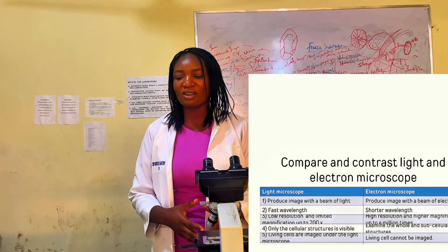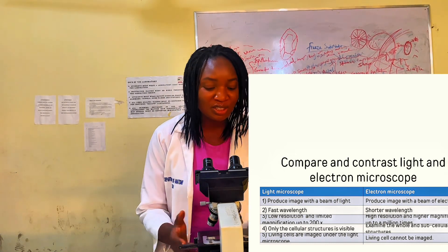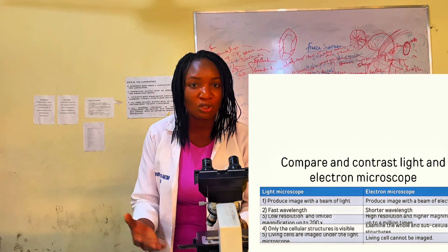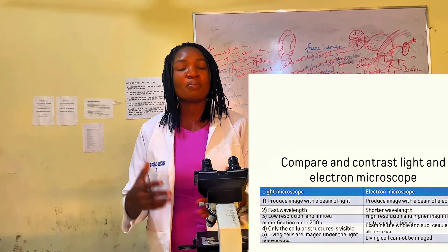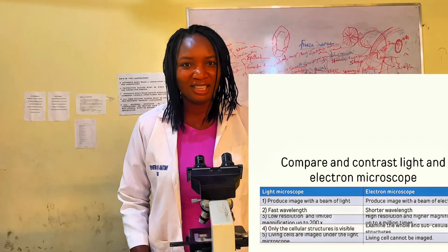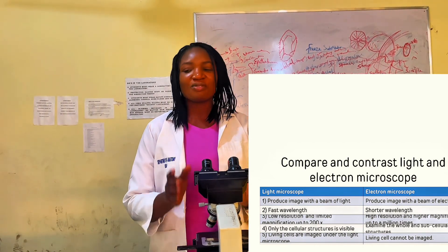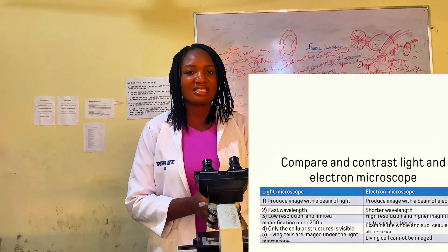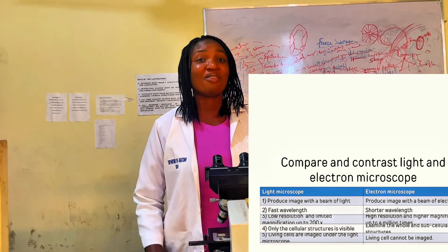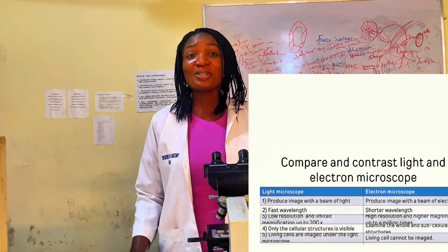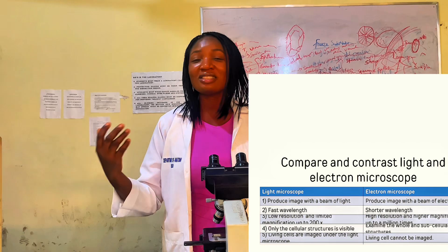Another difference is that living cells can be imaged in the light microscope — you can study the migration and division of cells under it. But in the electron microscope, living cells cannot be imaged. Additionally, the light microscope is very accessible and not expensive, unlike the electron microscope which is very expensive and not easily accessible. Light microscopes can even be used in secondary schools.